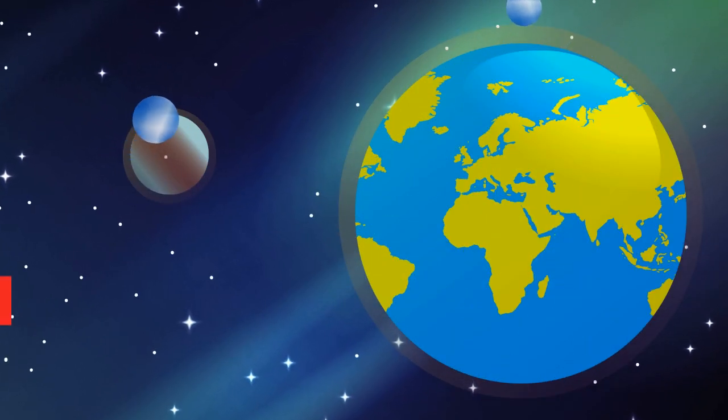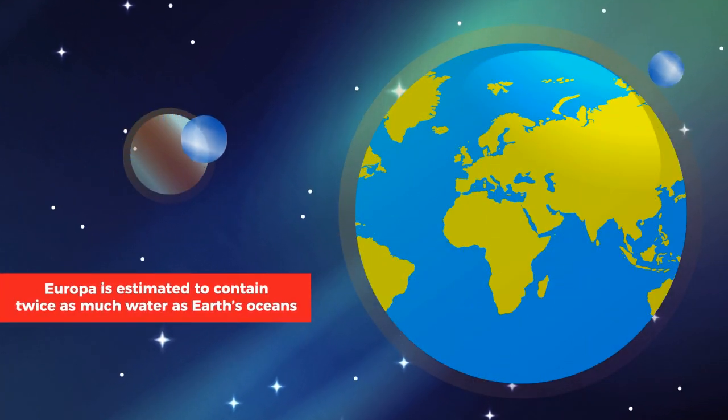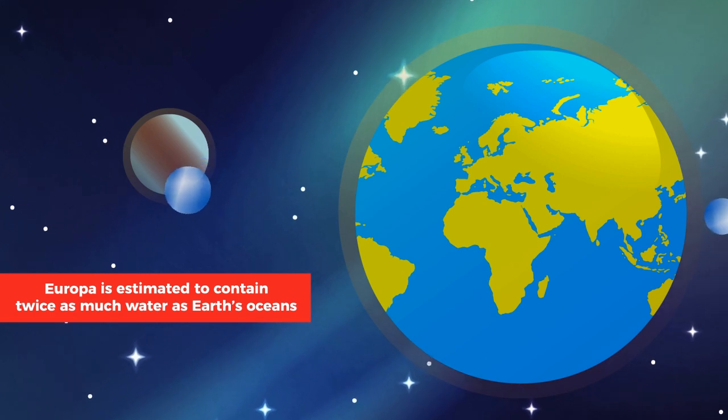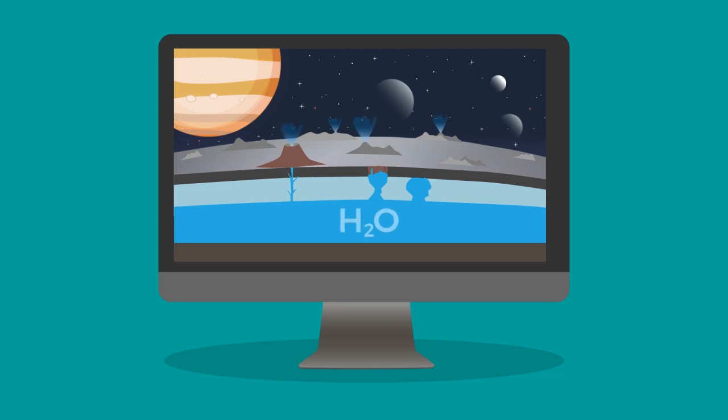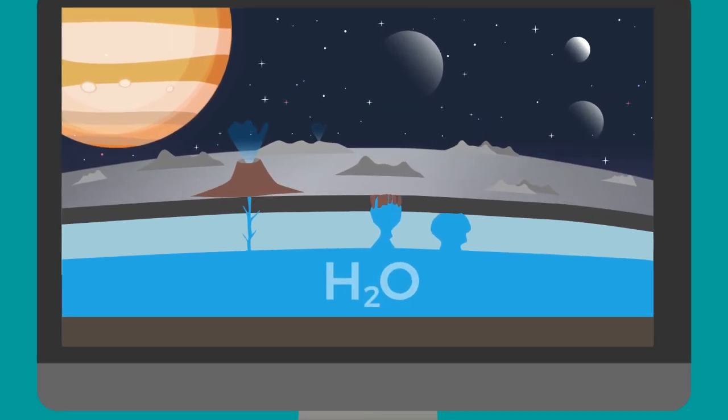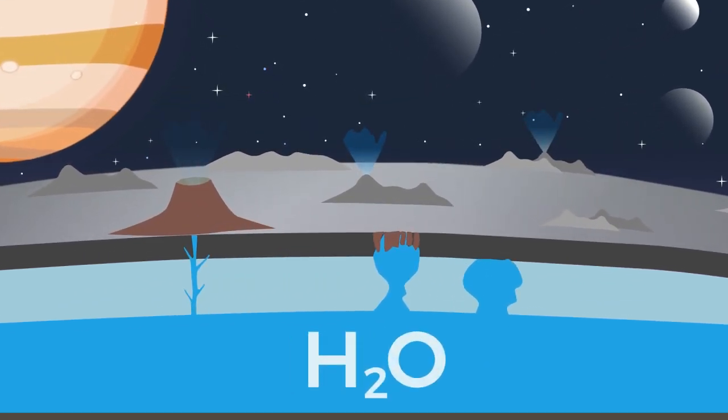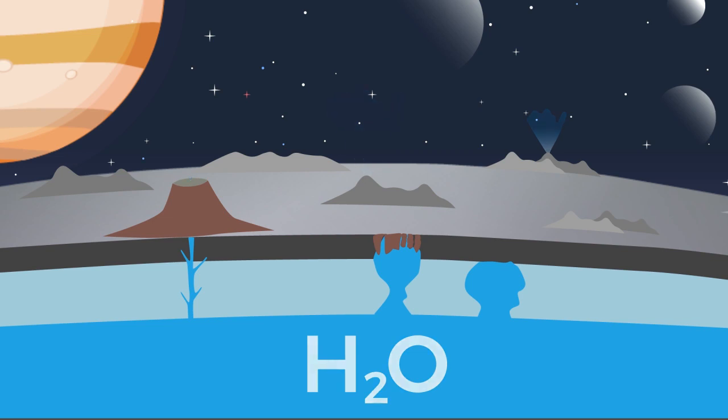Europa is a good bet because of its huge global ocean, which is estimated to contain twice as much water as Earth's oceans. There is slim to no chance life is active on Europa's hostile frozen surface, but below the ice, the liquid ocean is thought to be in contact with the seafloor, potentially mixing the water with other nutrients required to support life.